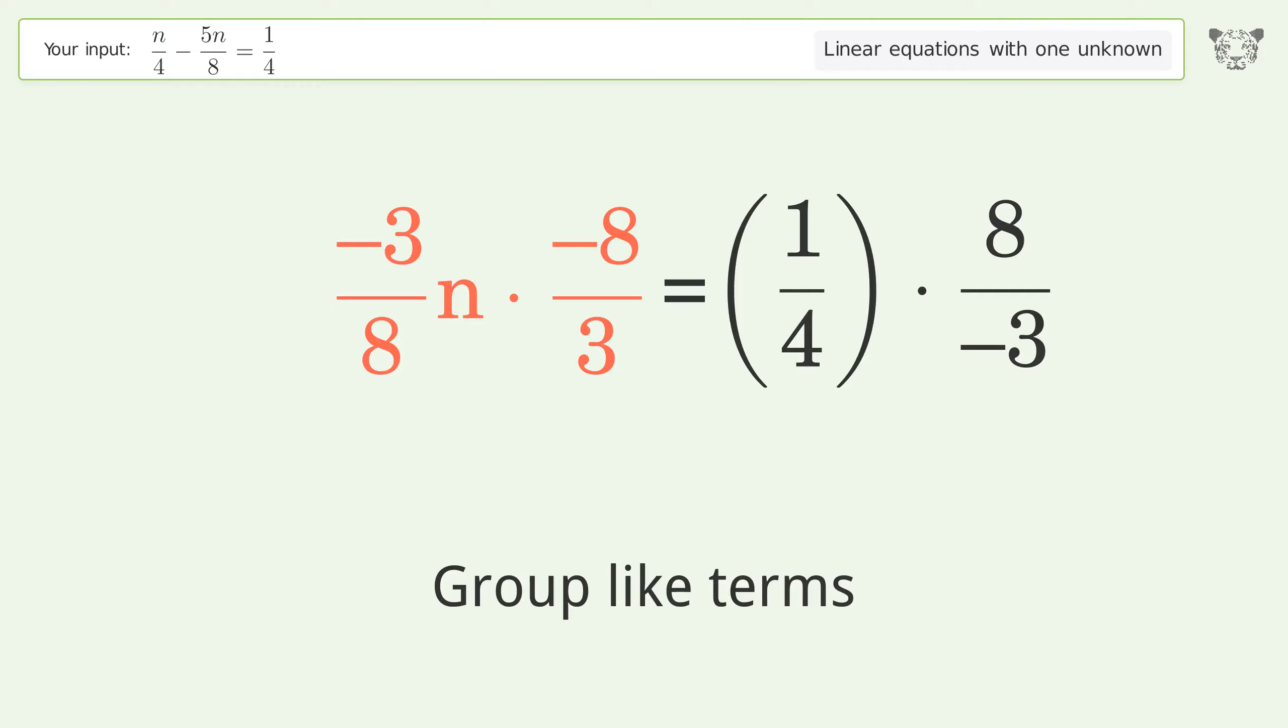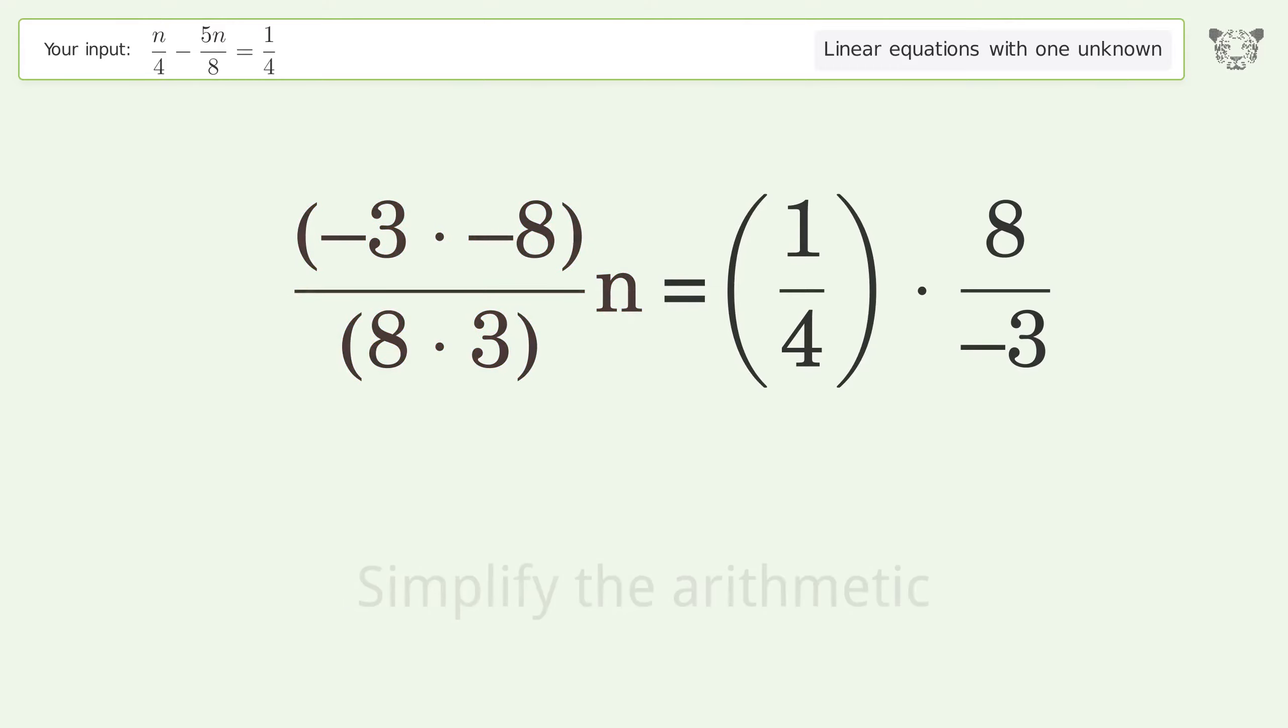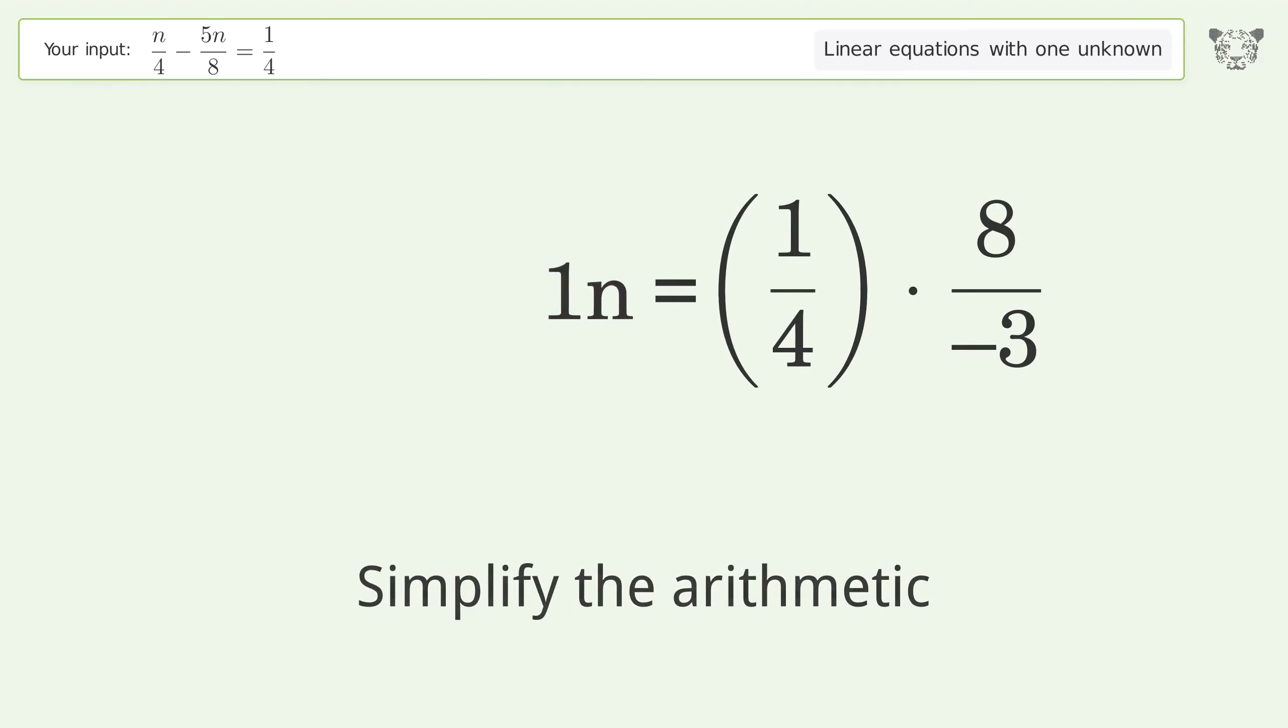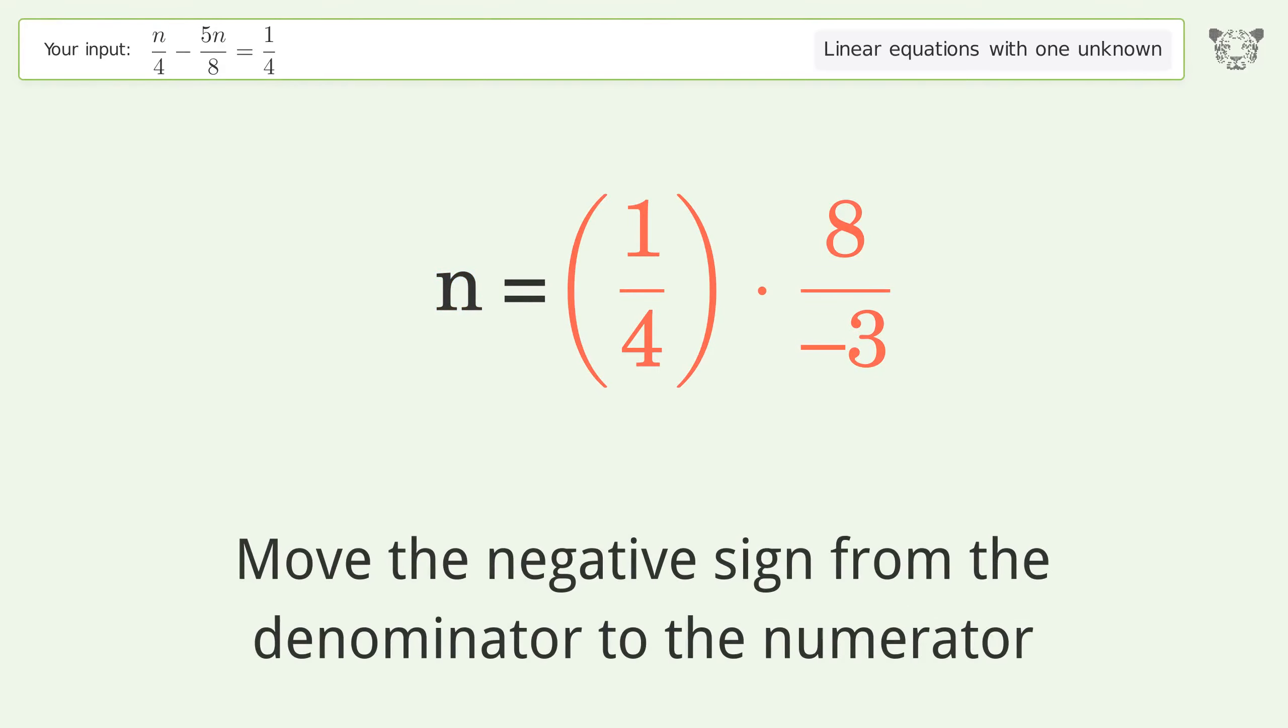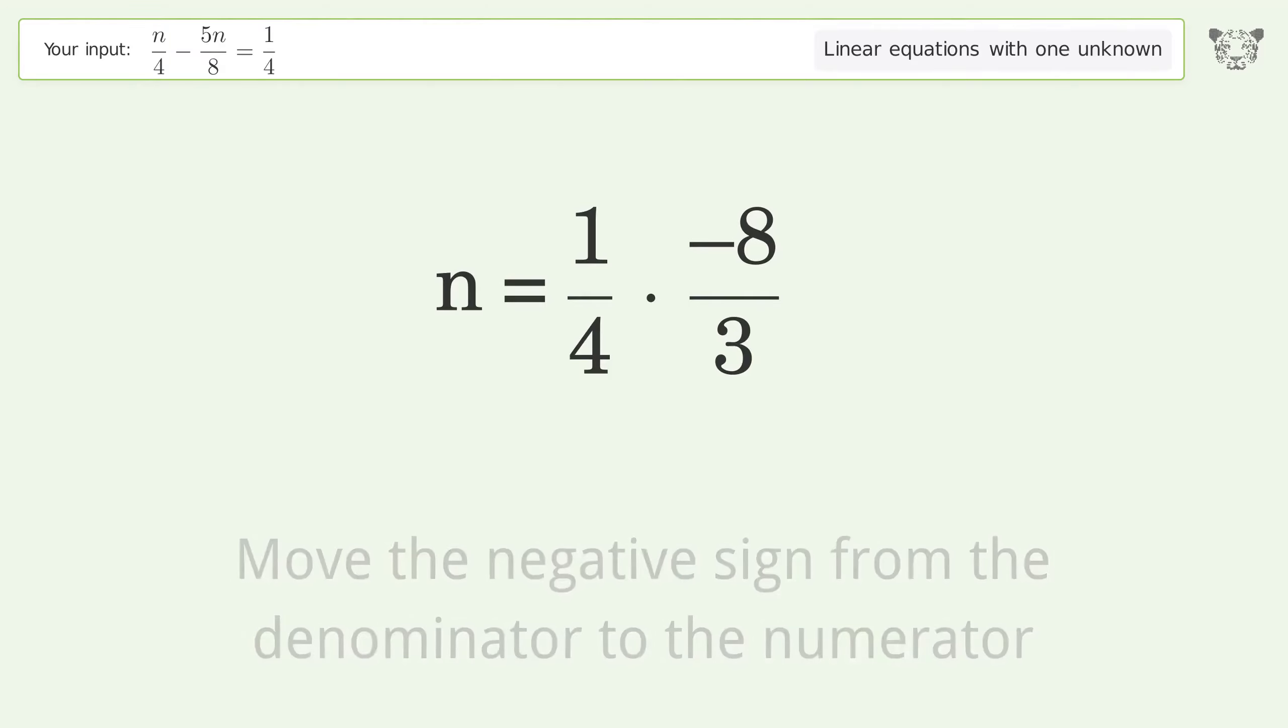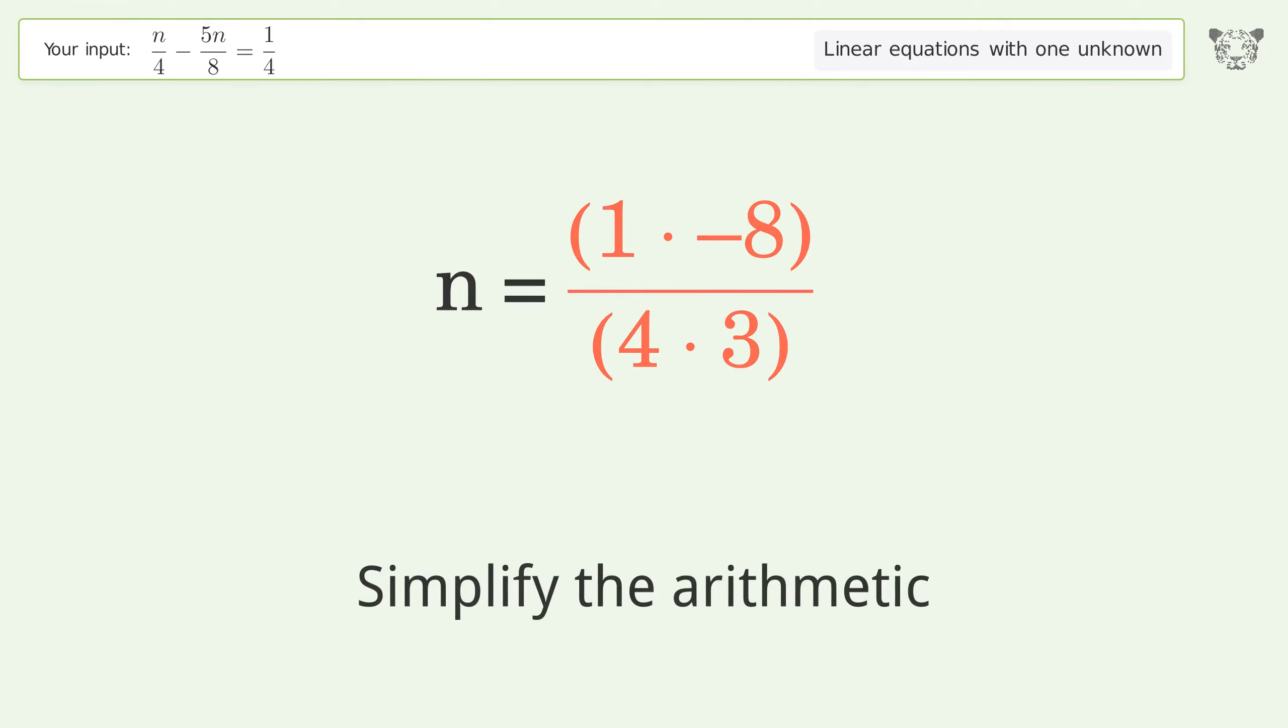Group like terms. Multiply the coefficients. Simplify the arithmetic. Move the negative sign from the denominator to the numerator. Multiply the fractions. Simplify the arithmetic.